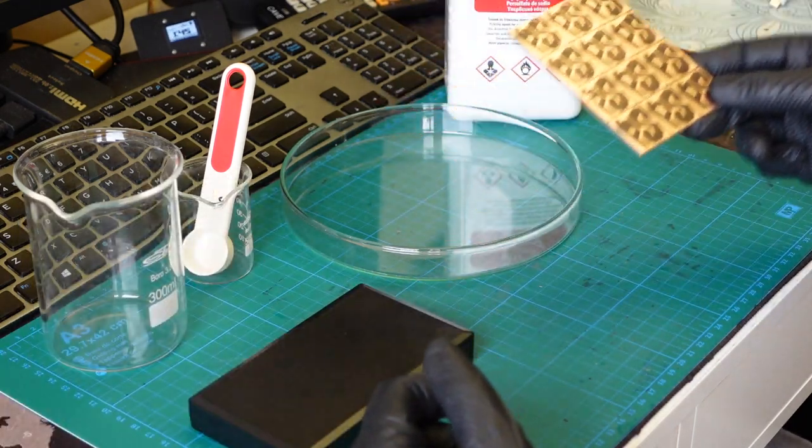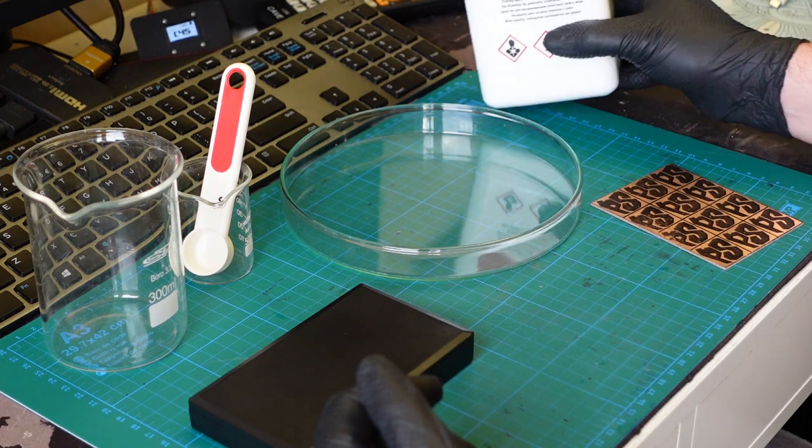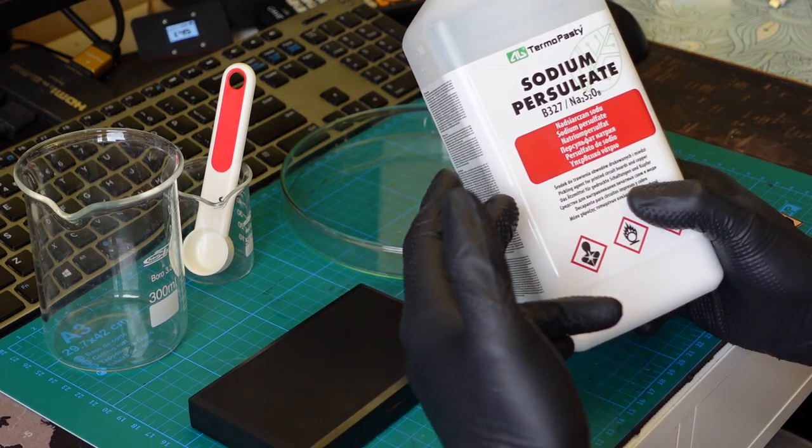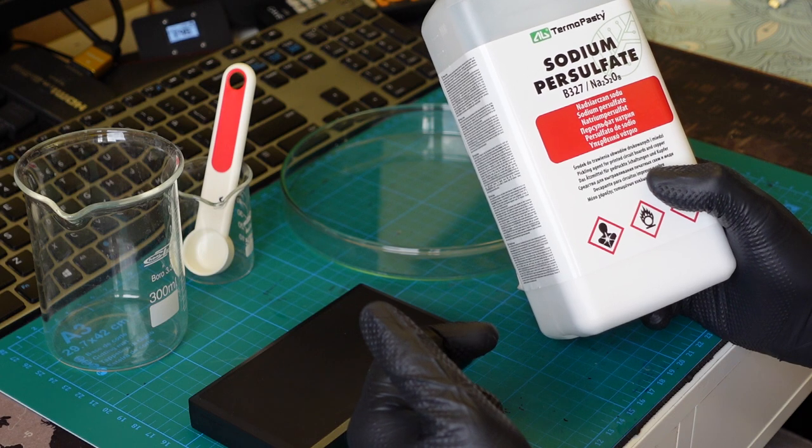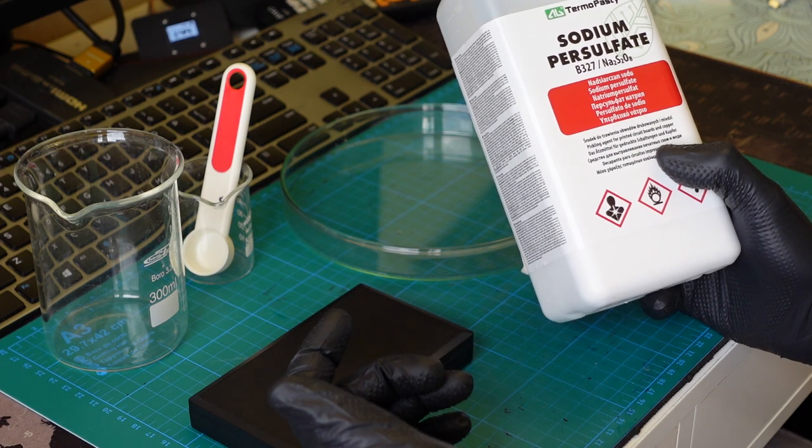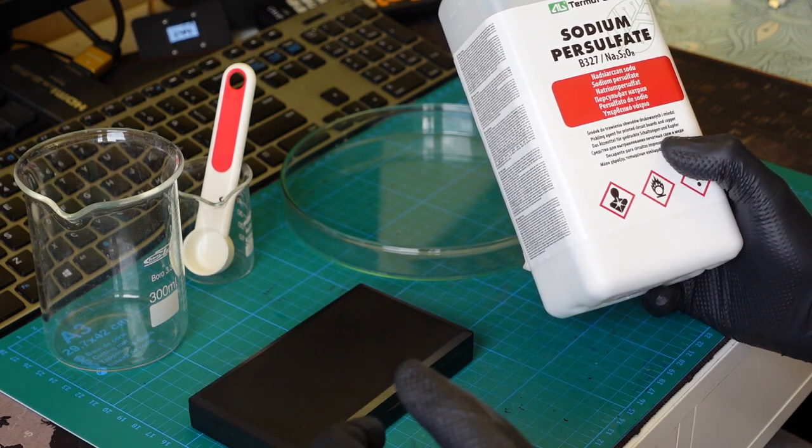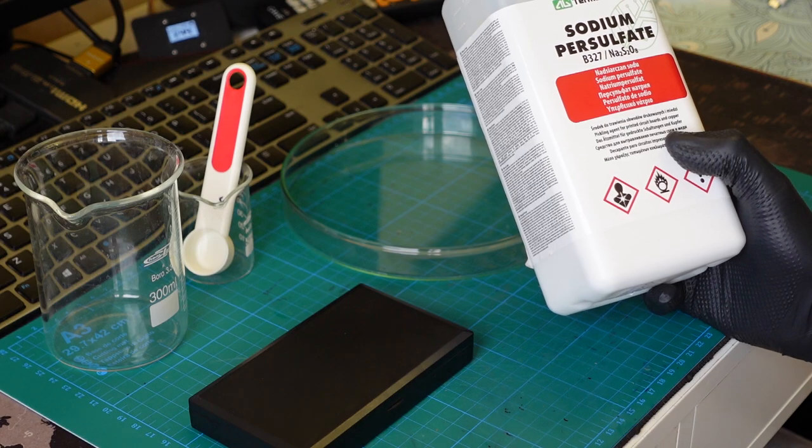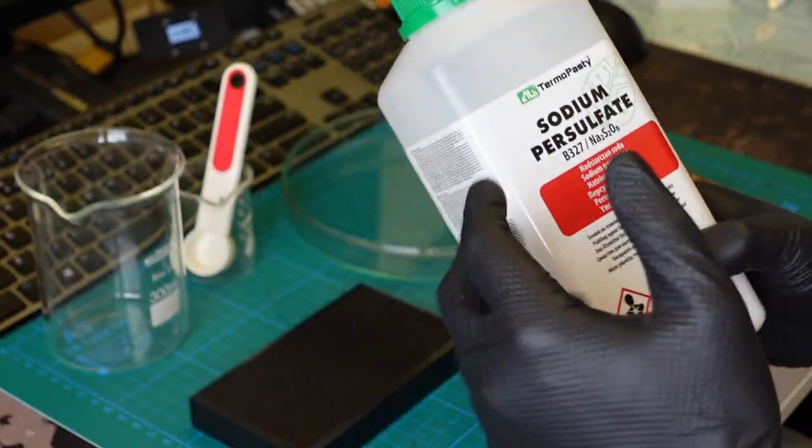So first of all, your PCB or board or whatever you want to etch. The next thing is an etching agent. Basically you have two choices: one is sodium persulfate which I have here, the other is ferric chloride. If you don't know what ferric chloride is, you don't want to know. It's more difficult to handle without doing harm to yourself and everyone around.